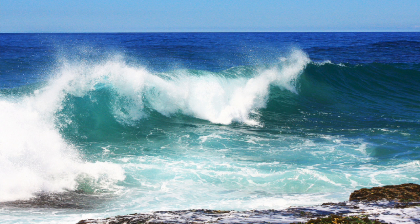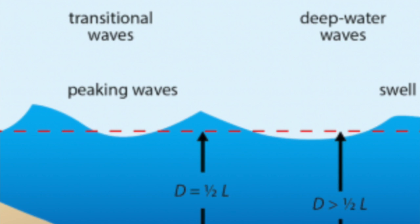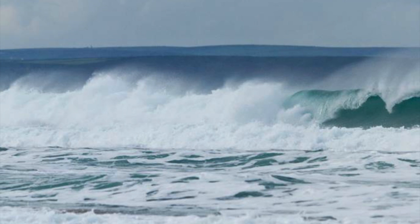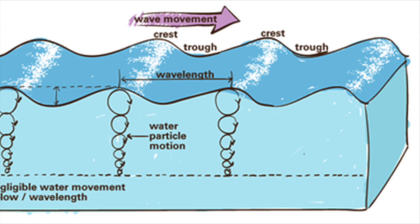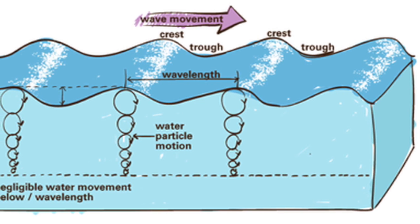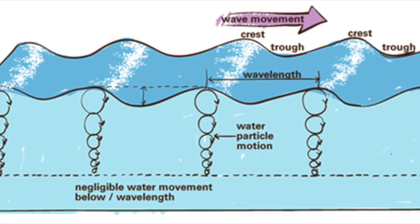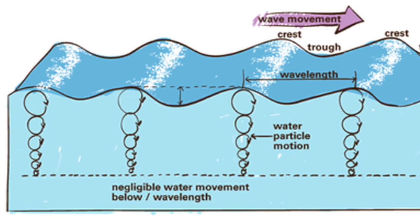Swells are deep water waves, meaning that the depth of the water is greater than half the wave's wavelength. When these deep water waves move into shallower regions, they change into breaking waves. When the energy of the waves touches the ocean floor, the water particles drag along the bottom and flatten their orbit. Circular orbital motion is when water moves in a circular fashion — first up and forward, then down, and then back to its nearby position.